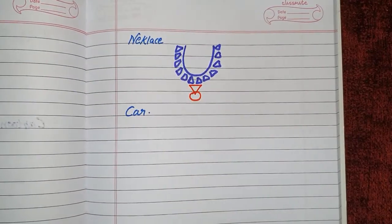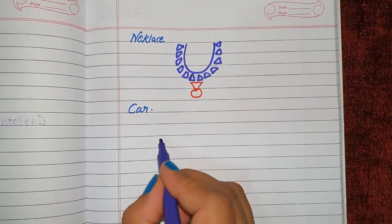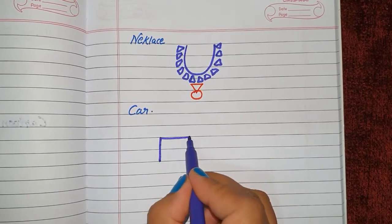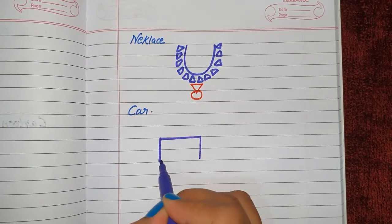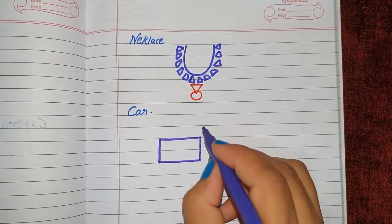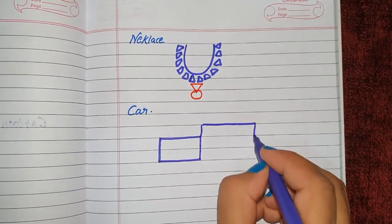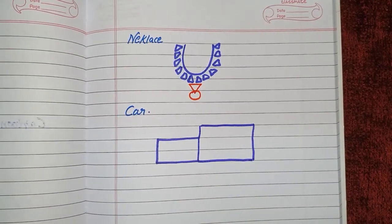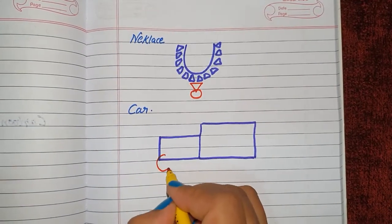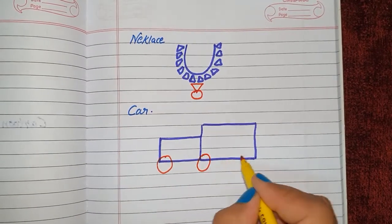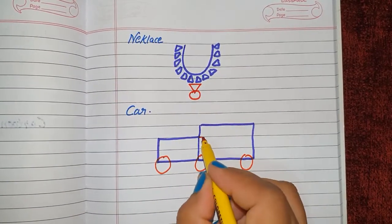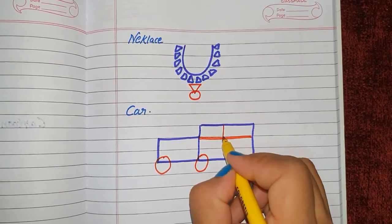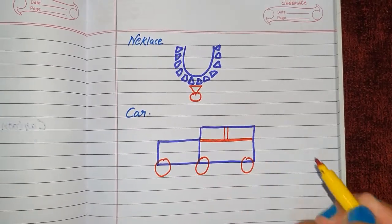Now we will make a car using basic shapes. First we make a triangle, then another triangle, then we make the wheels. Your car is ready!